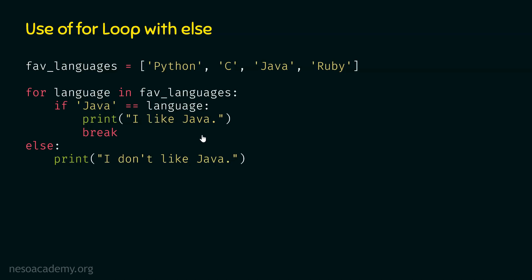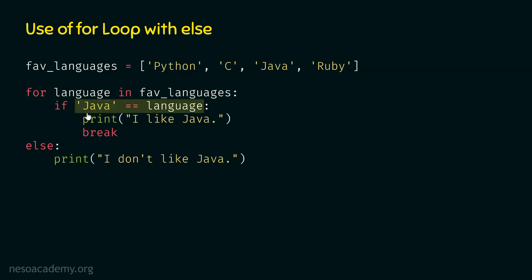Let's execute this code line by line. The first language received in the language variable is Python. Within the for loop, we check: is Java equal to language? At runtime, language is Python, so we are comparing Java with Python. These two are not the same, so we get false, and the print and break statements will not be executed.